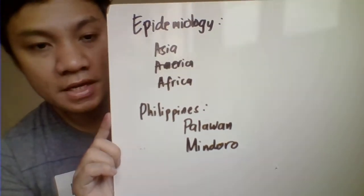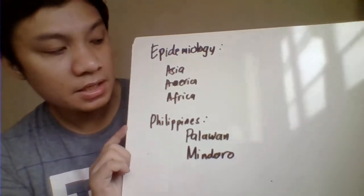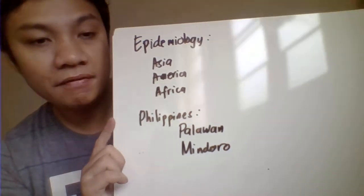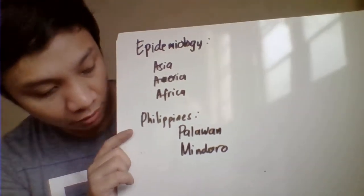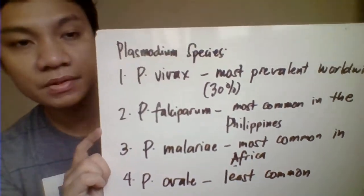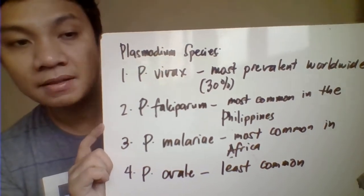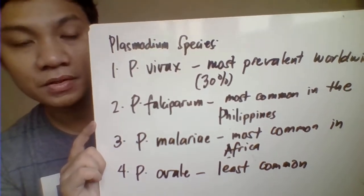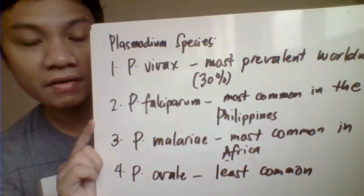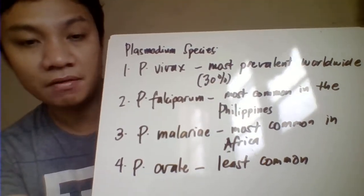For the epidemiology of malaria, it is very prevalent worldwide — in Asia, America, and Africa. In the Philippines, malaria infection is prevalent in Mindoro and Palawan. The different species of Plasmodium infecting humans include: vivax, which is most prevalent worldwide; falciparum, most prevalent in the Philippines; malariae, very common in Africa; and ovale, the least common of the four species.